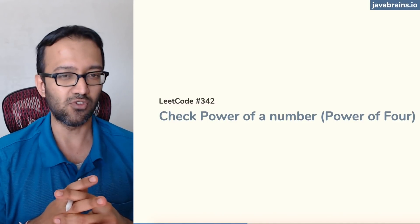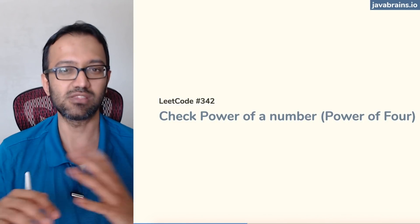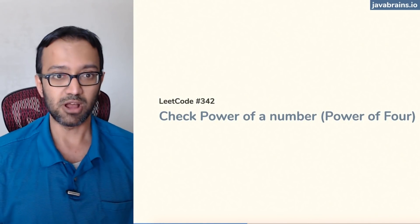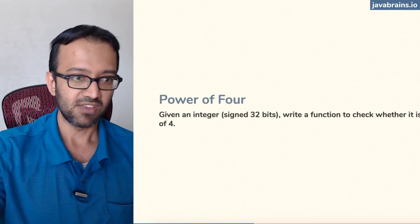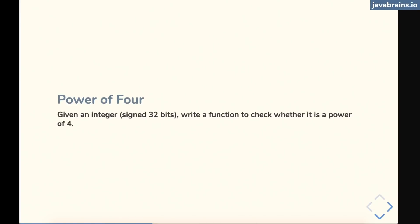It's Power of Four, but technically the approach can work for power of anything — checking the power of a number. Given a signed 32-bit integer, can you write a function to check if it is a power of four? Can you multiply four enough times to get that number? Is there four to the power of some number which gives you the input number?